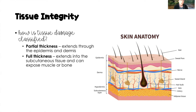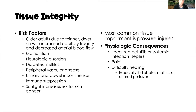With a full thickness injury, we can have exposed muscle or bone, which further leads to the risk for infection. Now, older adults are automatically prone to tissue integrity issues. As we age, our skin becomes thinner and drier, and we have increased capillary fragility, meaning our capillaries are more fragile and will bleed under the skin more easily.